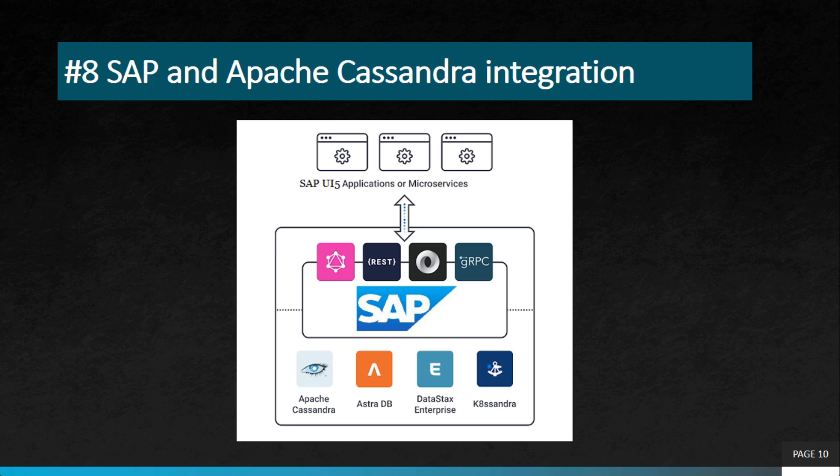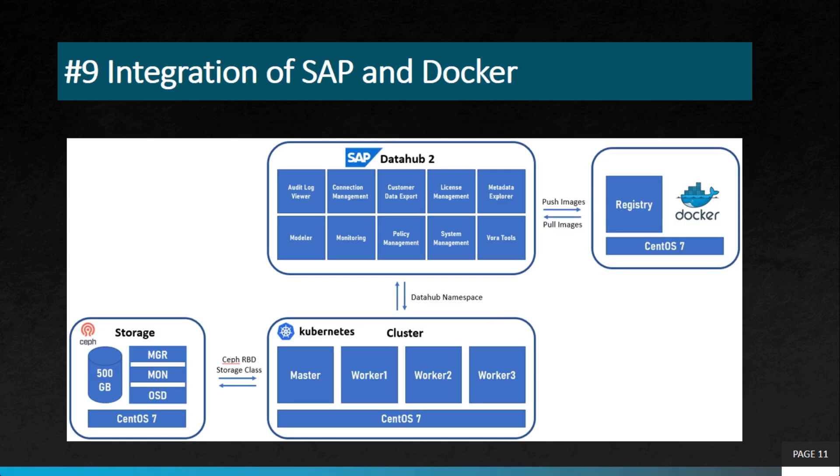Then we have SAP and Apache Cassandra integration. Apache Cassandra is an open source distributed database management system. The integration enables businesses to store and manage large volumes of data using SAP systems and Apache Cassandra — similar in concept to the MongoDB and PostgreSQL integrations discussed earlier.